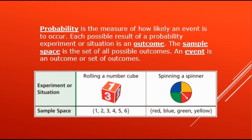Here is an example of an experiment. First, rolling a number cube. The sample space, or the set of all possible outcomes, are 1, 2, 3, 4, 5, and 6.